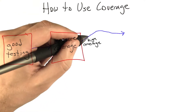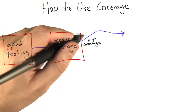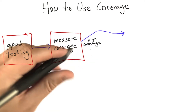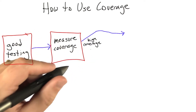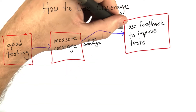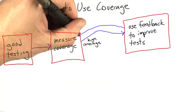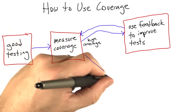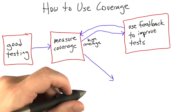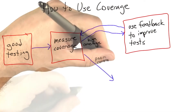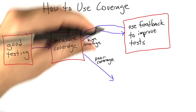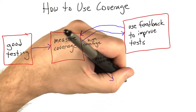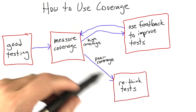If the coverage was pretty high, let's say 80 or 90%, then what we should do is use the feedback from the coverage tool to improve our test suite, and then measure coverage again. And if the coverage results were poor, that is to say maybe we only covered 20% of the statements in our code base, that's a signal that we need to rethink our testing strategy.